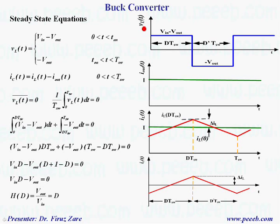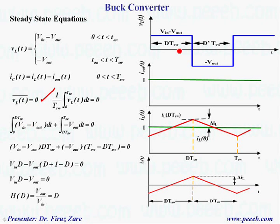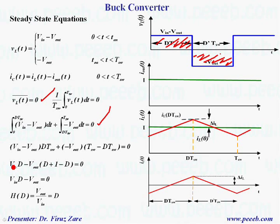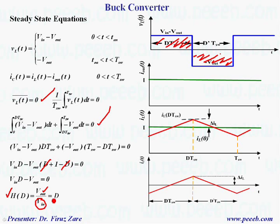Now we can see the voltage across the inductor over one switching cycle — when the switch is on and when the switch is off. Because the system is in steady state, the average voltage across the inductor should be zero. So finding this area plus this area and setting the average equal to zero, we get V_in times duty cycle minus V_out times duty cycle plus one minus duty cycle equals zero. When we simplify, we find the conversion ratio: output voltage over input voltage equals duty cycle. So in order to control the output voltage, since input voltage is constant, we can just control the duty cycle.